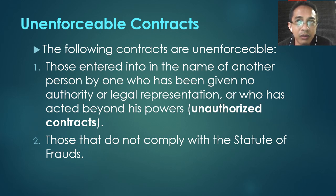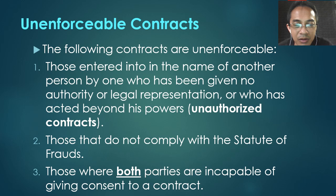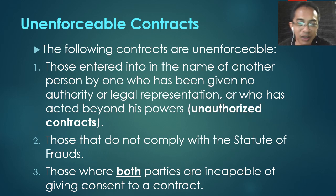Not all contracts need to be in writing — contracts are valid in whatever form they are entered into, except those required to be in writing under the Statute of Frauds. The third type of unenforceable contract: both parties are incapacitated — both minors or both insane. Both parties are incapable of giving consent. Unlike voidable contracts where only one party's consent is defective, here both are incapacitated.